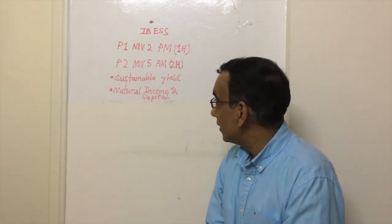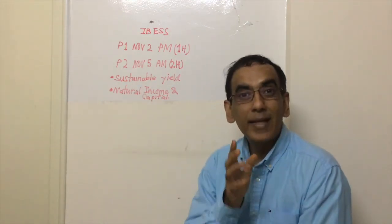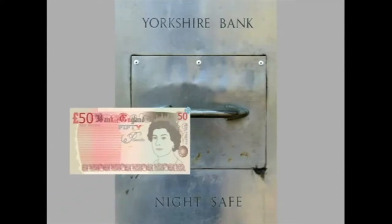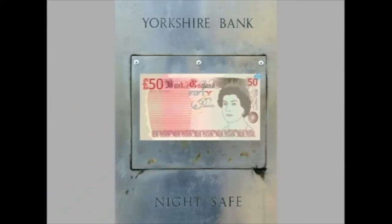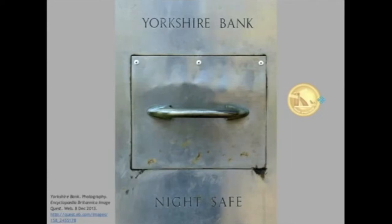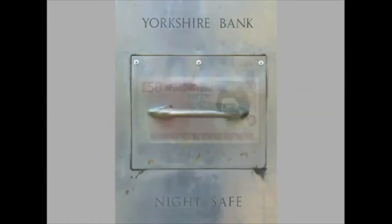It's got to do with sustainable yield, natural income, and natural capital. Let's move in and take a closer look. When someone deposits £50 into a bank account, we can describe this deposit as a capital investment. If left for a period of one year, this £50 deposit yields £1 of interest. And if the depositor were to continue to use £1 per year, then the initial deposit of £50, or this capital stock,